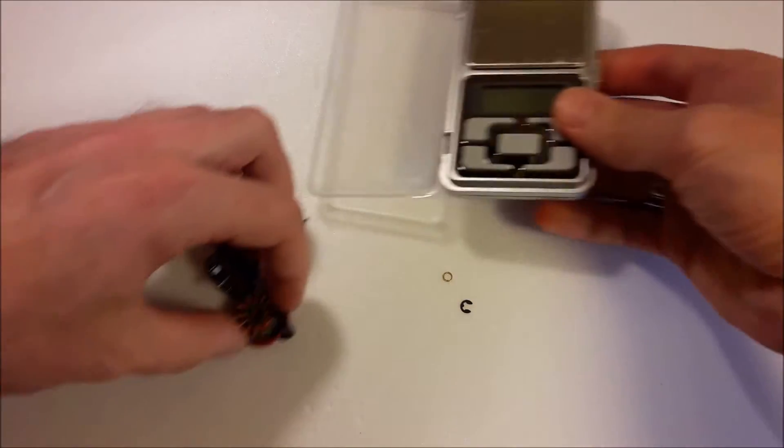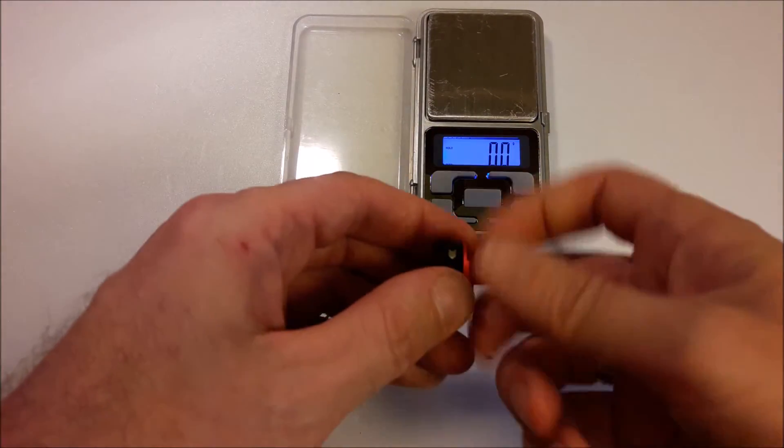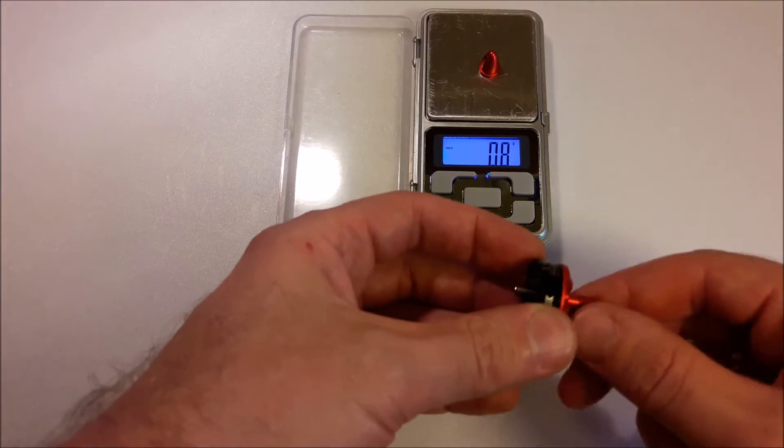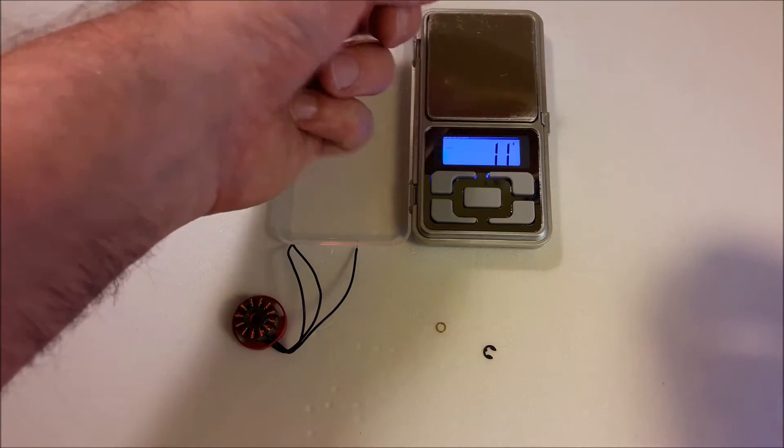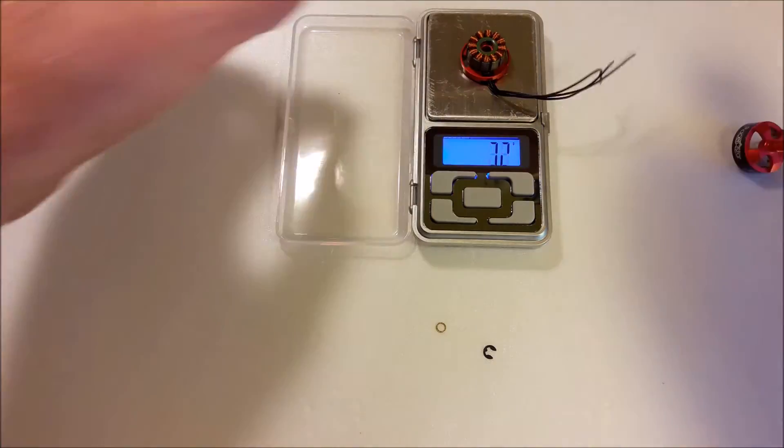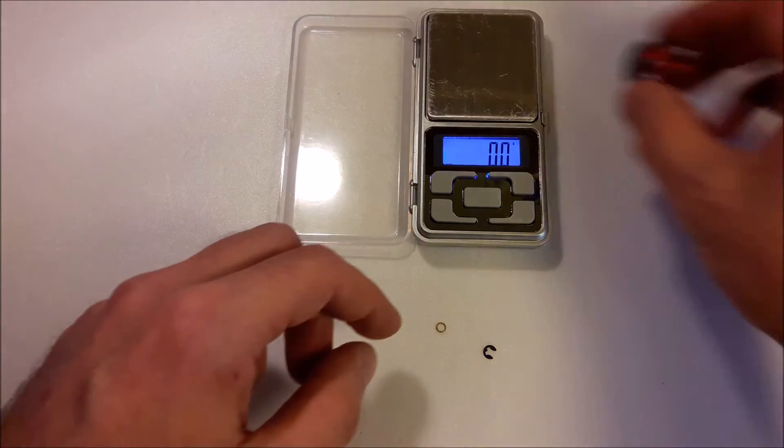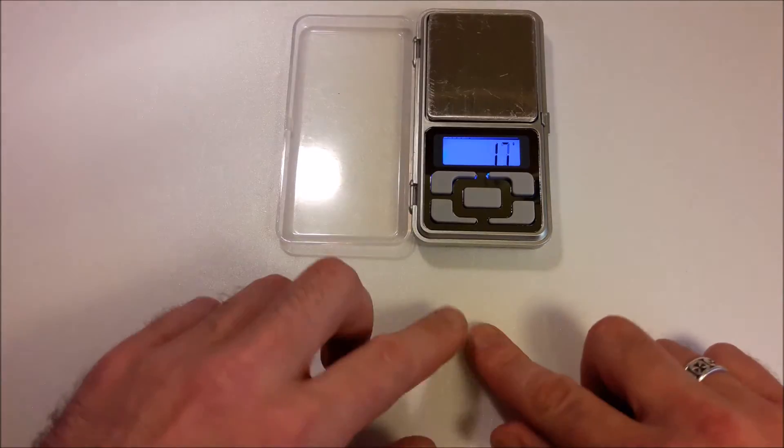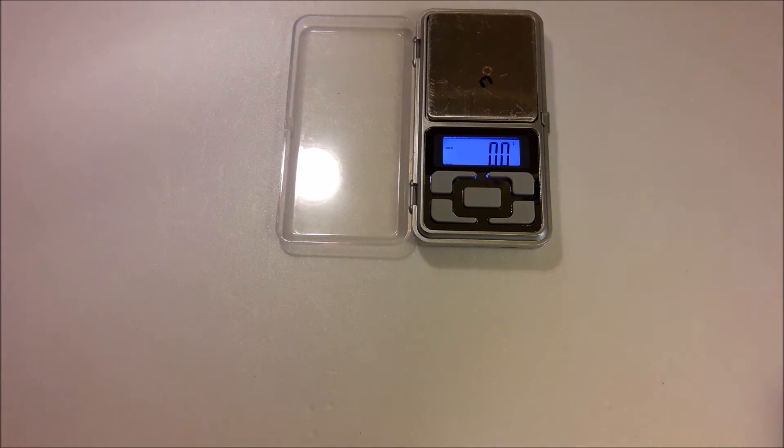So the lock nut, prop nut, is 0.9 grams. Stator is 10.3 grams. Rotor is 4.5 grams. And this little C clip and washer weighs nothing.